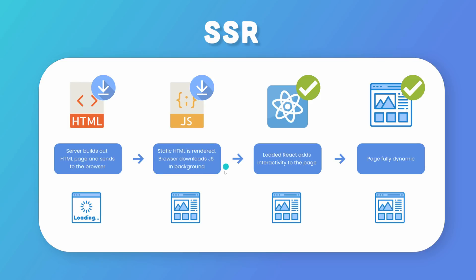And that is called hydration. It's a process where it initially paints out the full HTML page, and then it adds the interactivity to it. Once that JavaScript is loaded up in the background, your page also becomes fully dynamic. So the advantage of this is that when you get the HTML file back to the browser, it's already going to have all the content loaded up. It's not going to be an empty HTML with the bundle JS attached to it. So it's really good for SEO. An example here would be something like Reddit, where you want all the posts to be Google searchable and all the content to be fully rendered out.